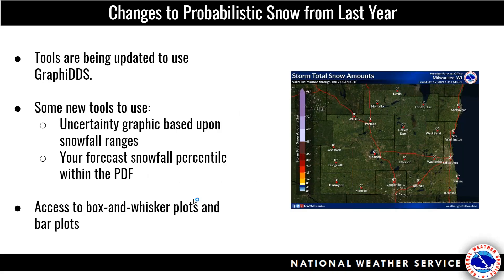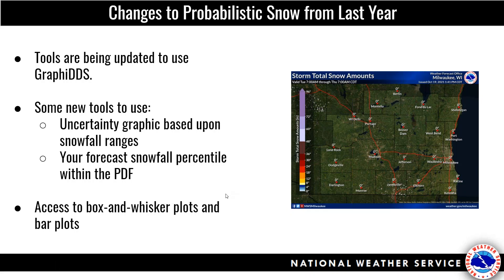Looking ahead compared to last year, there are a few changes coming. The biggest change is that GraphEDSS will now be the graphic software used in all probabilistic messaging — that includes the PWPF, or props.no, web page that every office has, but also all of the tools that Jerry provided to the test bed have all been converted to use GraphEDSS. It gives a nicer, more professional look to all of our images, and you can run those using the same tools as before. Training will be coming out very shortly.